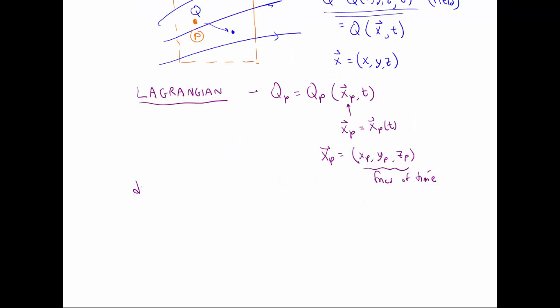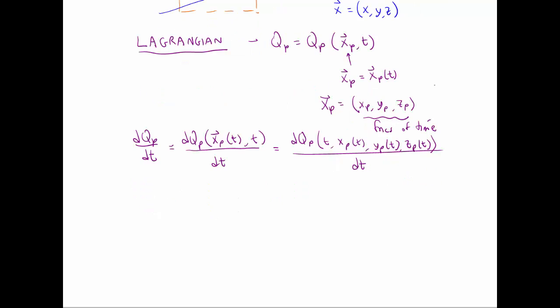Now what we want to do is consider the rate of change of qp with respect to time. So dqp dt, and that'll be dqp of xp of time, xp is a function of time, and t itself. So we can expand this out. Now we have to use the chain rule. If we're taking these derivatives, since q is now a function of more than one variable, we're taking the derivative of qp with time, but there are four separate variables. So by use of the chain rule, we would write dqp dt is a partial derivative of qp with respect to one of the variables. And I wrote the t first, just for convenience. That's what we usually do.